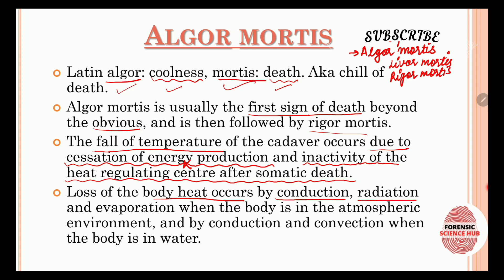Loss of body heat occurs by three methods: conduction, radiation, and evaporation when the body is in the atmospheric environment. When the body is in water, heat loss occurs by conduction and convection only. So if the body is left in the atmosphere, all three methods — evaporation, conduction, and radiation — contribute to heat loss.